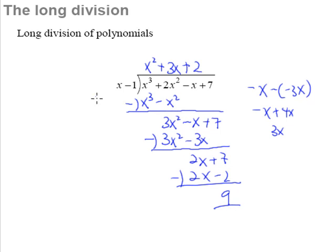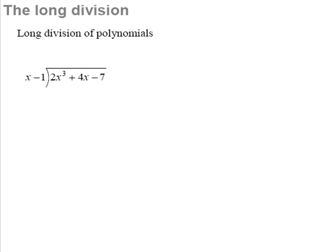So that is how we do long division of polynomials. Now let's take a look at the next example: 2x cubed plus 4x minus 7 divided by x minus 1. The first thing to note is that this goes from x cubed straight to x — it skips the x squared term. In cases like this, it is highly recommended that you leave a space for your x squared term.